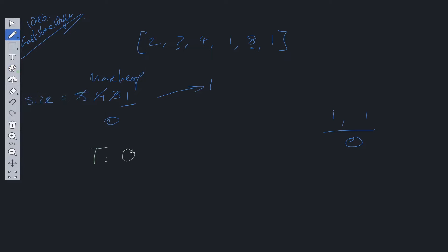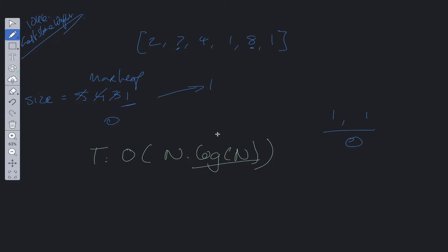The time complexity is O(n log n): it takes n operations to create the heap, and log n operations to heapify into a max heap. Enqueuing and dequeuing from the heap are also log n operations, so total time complexity is O(n log n). Space complexity is O(n), since we're storing n nodes within our heap.